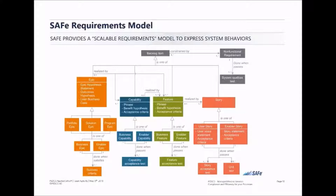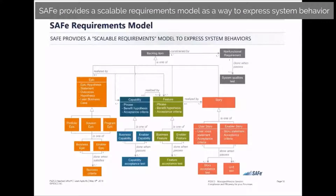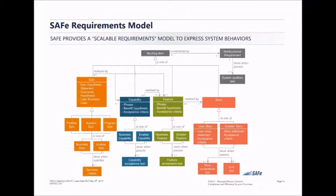In support of bringing the benefits of lean and agile development to complex systems, SAFe provides a scalable requirements model as a way to express system behavior with epics, capabilities, features, stories, and non-functional requirements. These artifacts largely replace traditional system and requirements specifications with new paradigms based on lean-agile development. These newer paradigms are intended to avoid focusing too early on a point solution — not picking specific requirements and designs far too early in the learning process. It rather leaves room for an emerging understanding based on intent and not specificity.